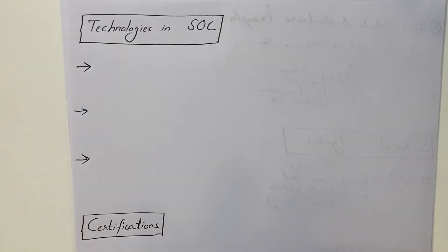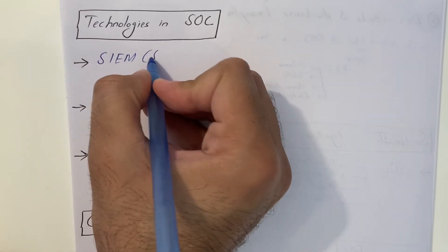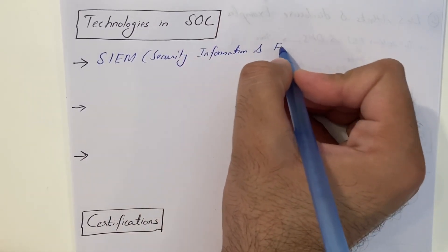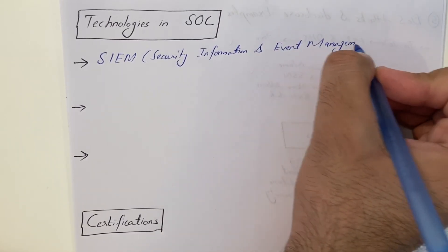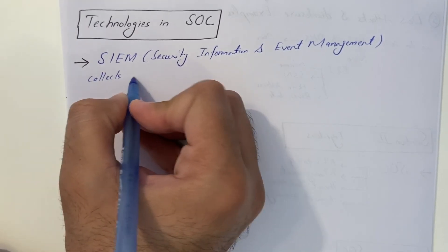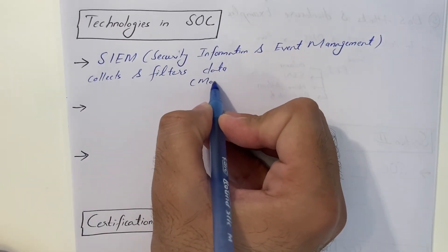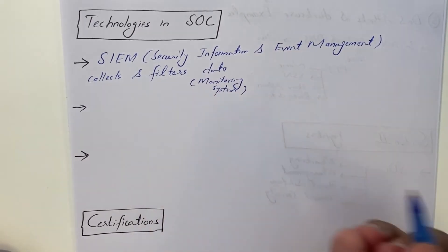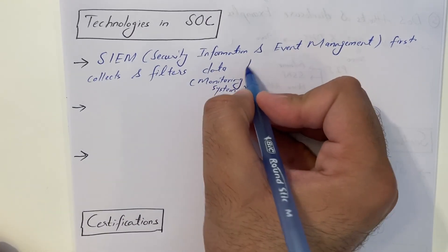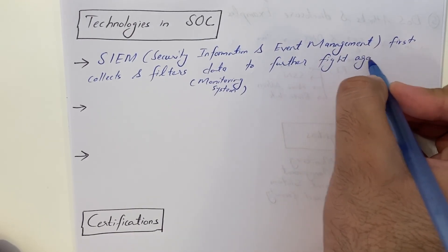The technologies that SOC use or which they must include. First of all, the technology is SOC, they use a technology or software which is called SIEM. SIEM stands for Security Information and Event Management. What exactly it does, it actually collects and filters data which is coming from monitoring system. It first collects and filters the data to further fight against threats.